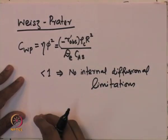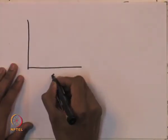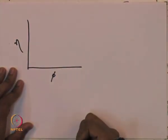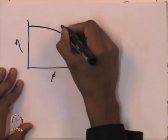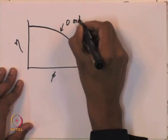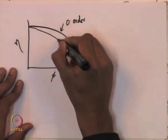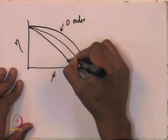The question is: what is the validity of this criterion? When does it work, and does it work for all catalytic reactions? To understand this, let us look at the classical plot of Thiele modulus versus internal effectiveness factor η. For a zeroth-order reaction, first-order reaction, and second-order reaction, the curves look progressively different on this graph.